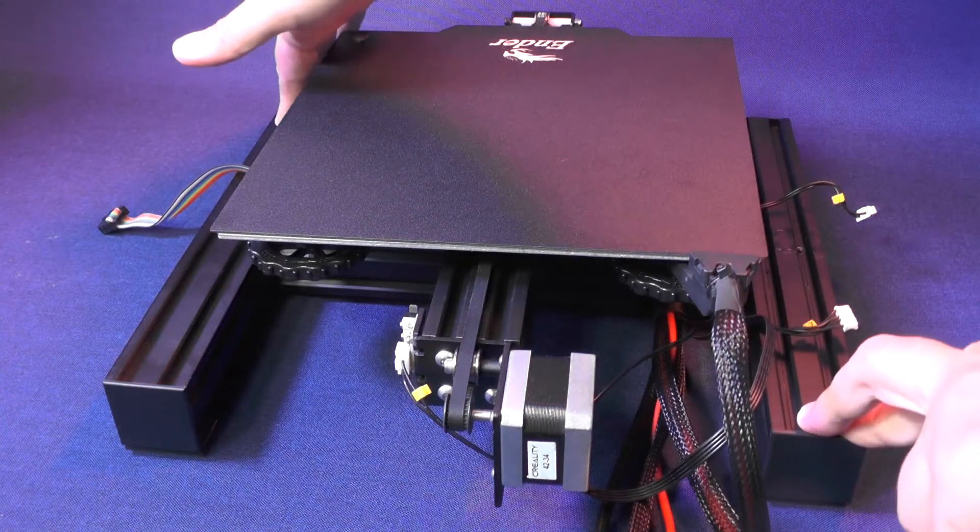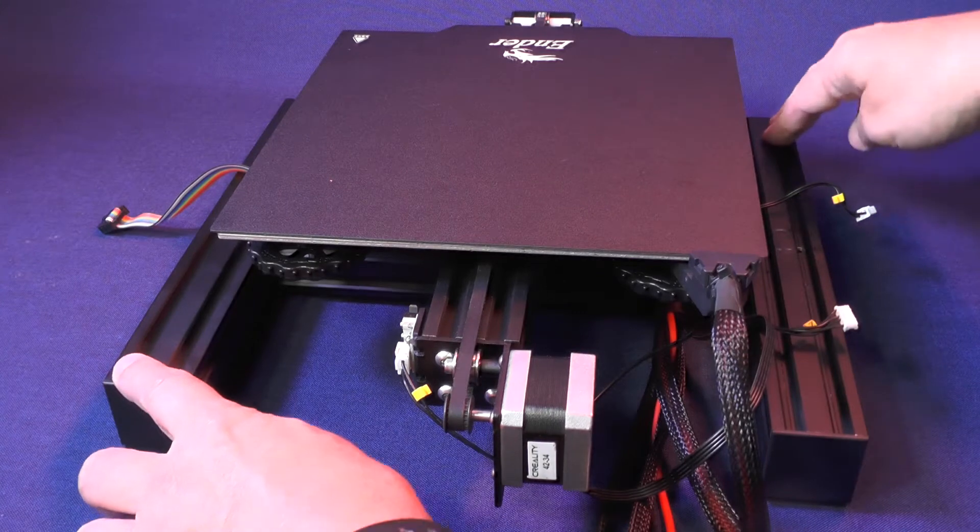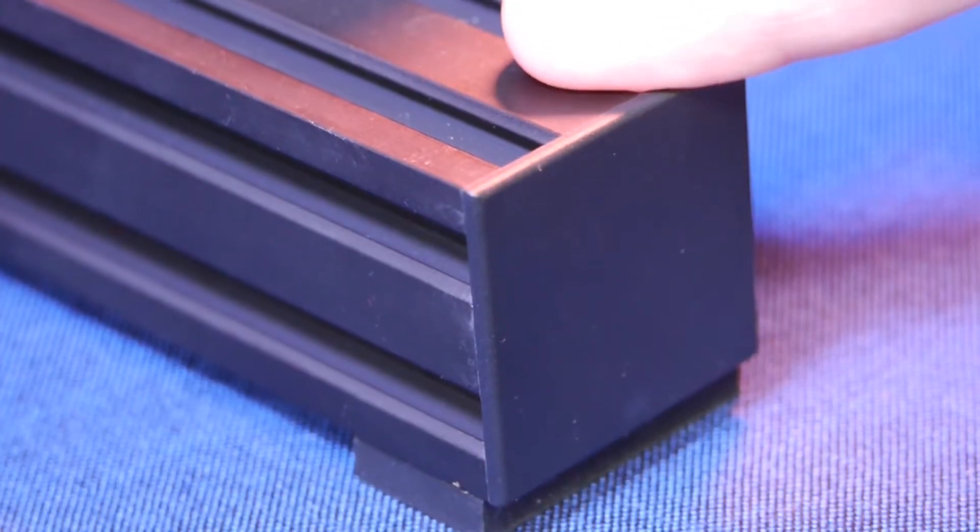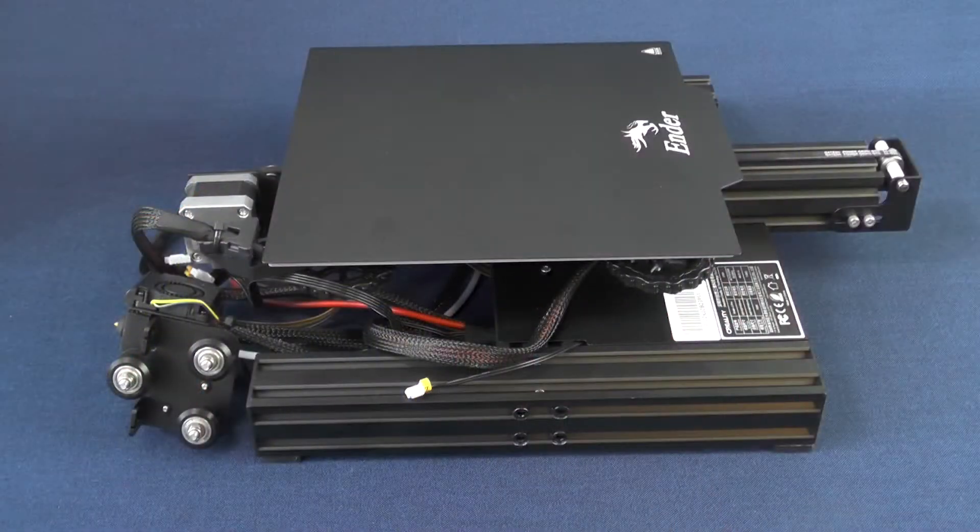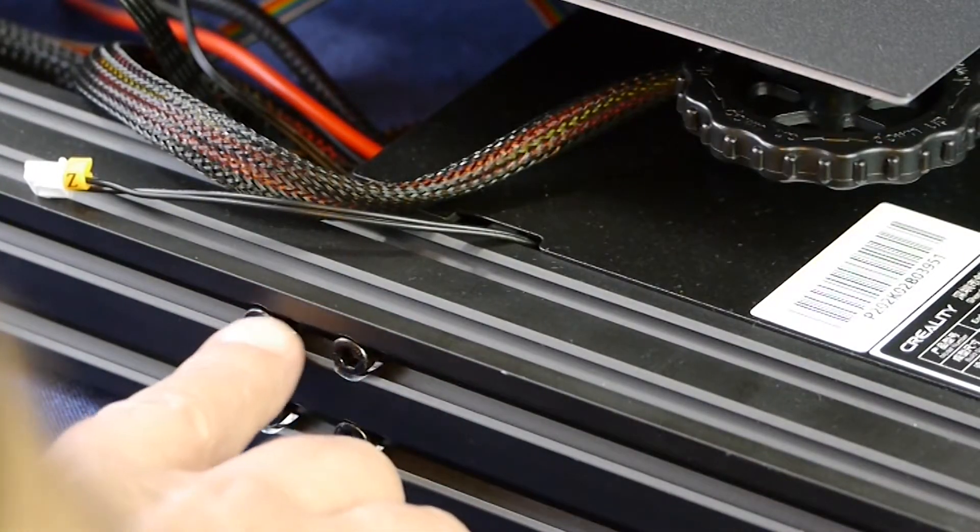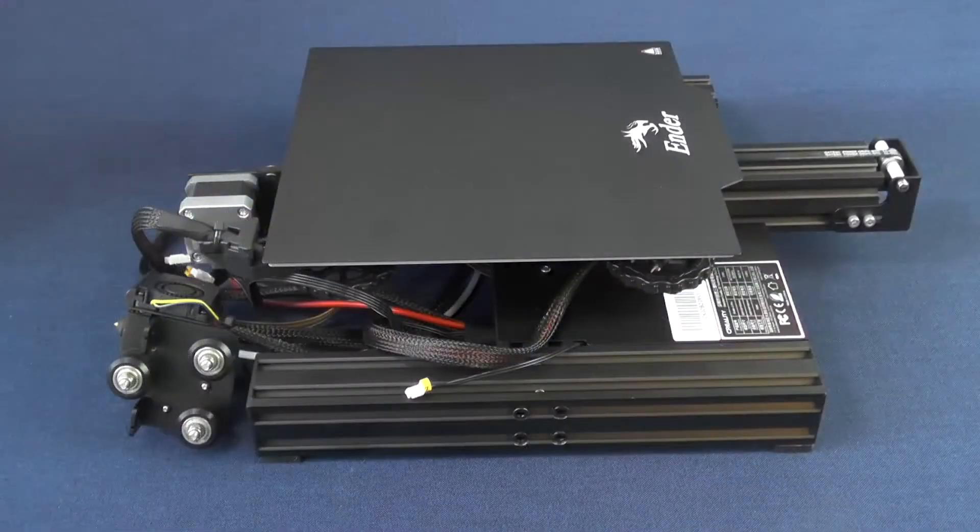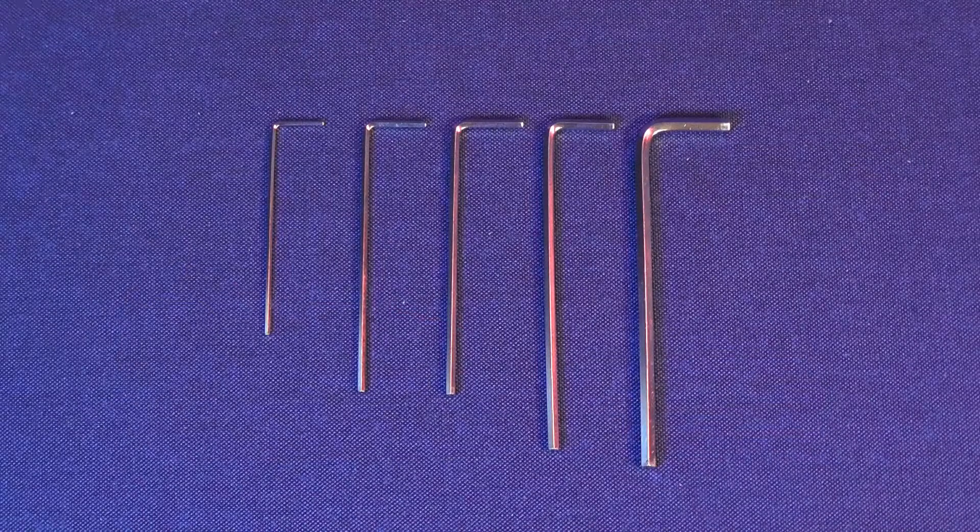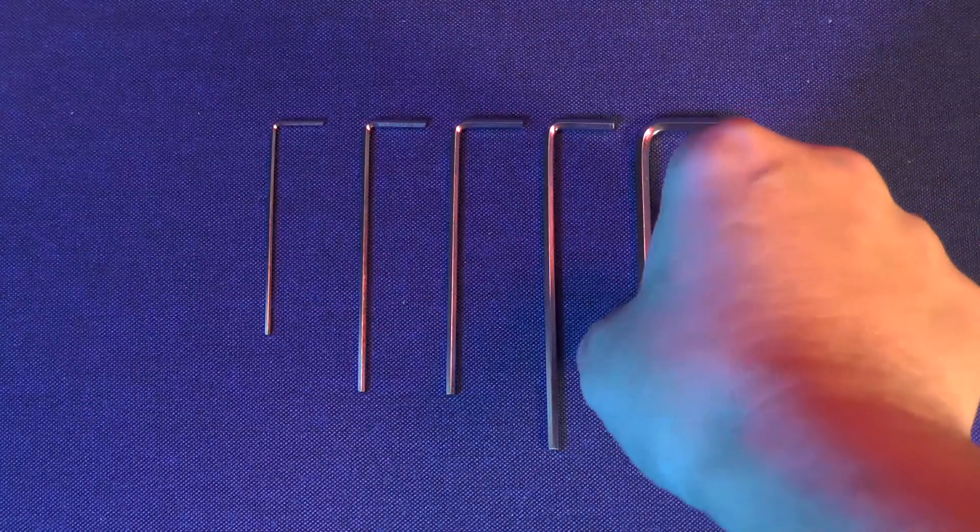You may not have the same problem that I had, but the base of my printer, which comes pre-assembled, had wobbly feet as you can see here. To fix this problem, we just need to loosen these four screws on one side of the base of the printer and allow the four feet to settle down on a flat surface. To accomplish this task, we are going to need the largest hex wrench that came with the printer.